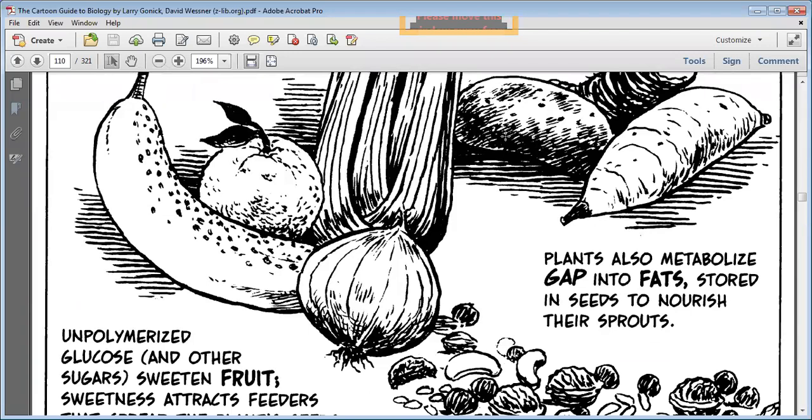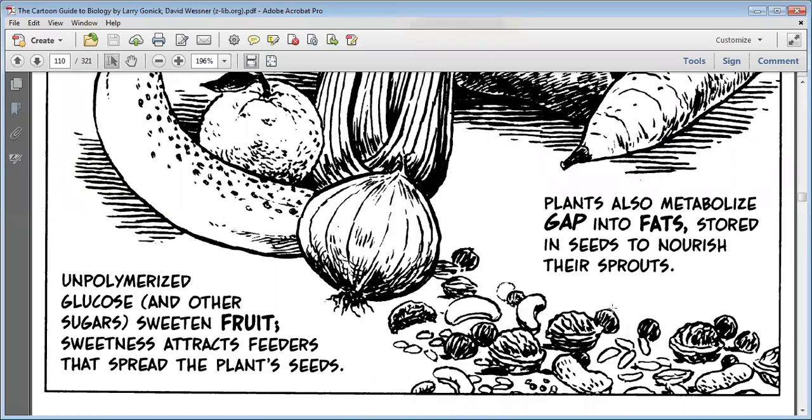Plants also metabolize GAP into fats stored in seeds to nourish their sprouts. Unpolymerized glucose and other sugars sweeten fruit. Sweetness attracts feeders that spread the plant seeds. You have studied pollination. What happens in pollination? Who ate the fruits? Some birds ate it, or the flowers or nectar. This is the process of pollination, dispersal of seeds through wind, through water, through animals.